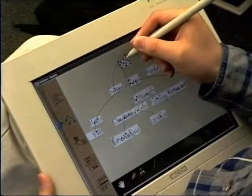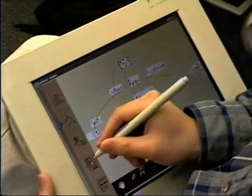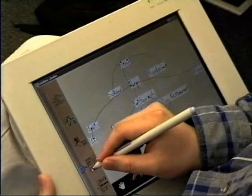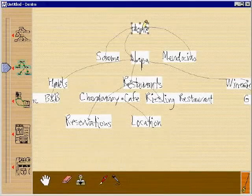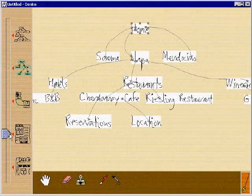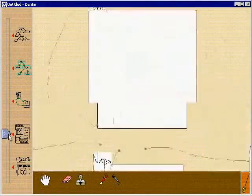Now Bob wants to fill in the contents of the pages. He moves the slider in the zoom bar down a couple of levels. Denim zooms in from sitemap view to sketch view, and the actual pages become visible.